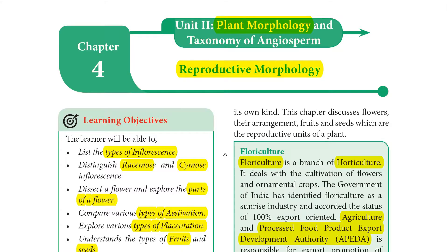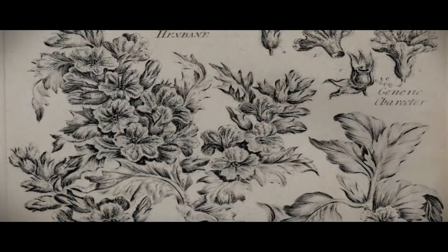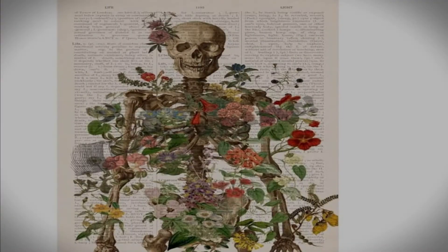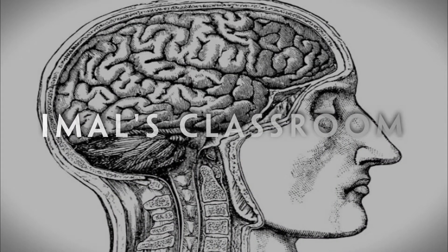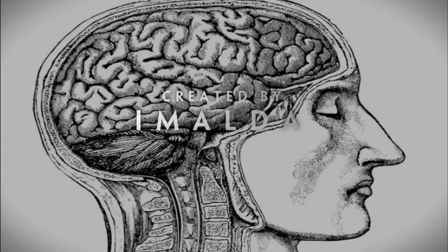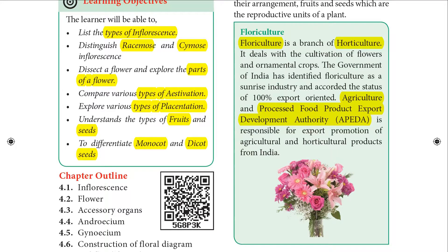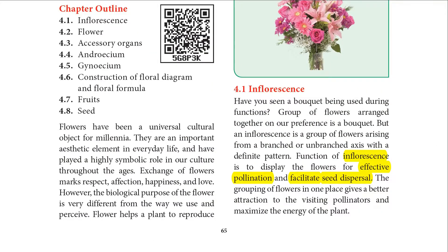Hello students, now we are going to learn the new lesson in botany: the fourth lesson, Reproductive Morphology. We will learn about the different types of inflorescence, differentiate between racemose and cymose inflorescence, explore the parts of a flower, learn about the different types of aestivation, different types of placentation, types of fruits, and seeds. We will also differentiate dicot and monocot seeds.